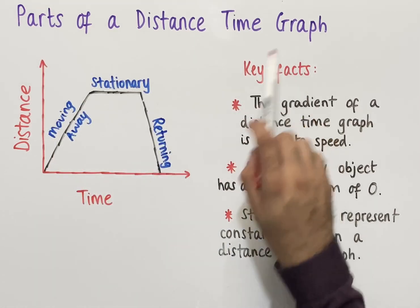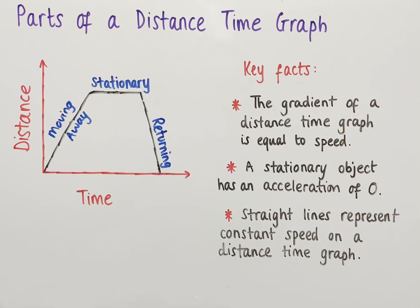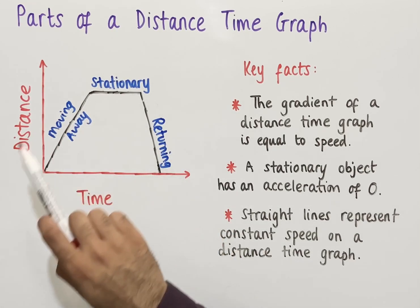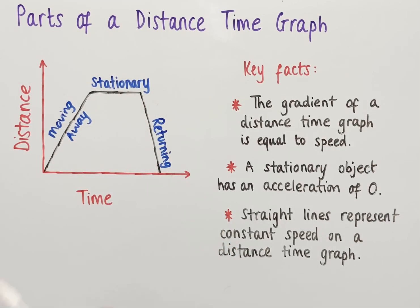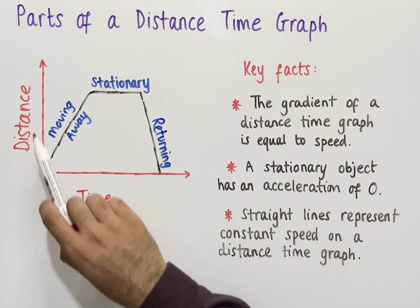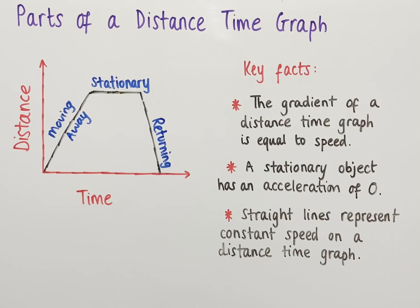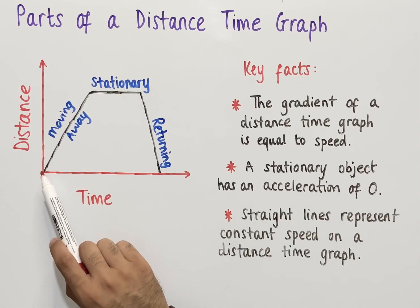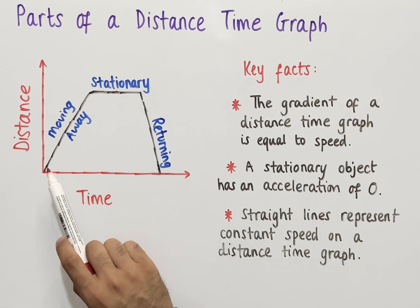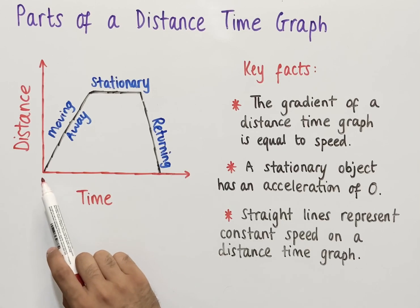Let's look at parts of a distance-time graph. A distance-time graph is an example of a travel graph that is used to model the motion of an object. Here we've got a basic distance-time graph with each of the parts labeled with some keywords. We always have distance labeled on the y-axis and time labeled on the x-axis. More often than not a distance-time graph starts from the origin, however it could start at a time further on from zero.